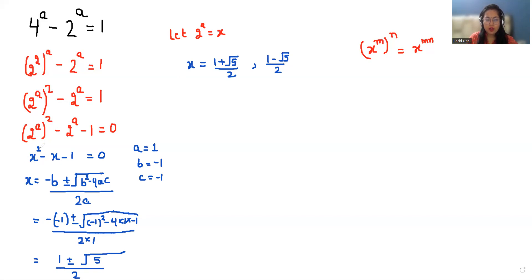Since 2^a will always be greater than 0, the negative value must be rejected. So this value is rejected.